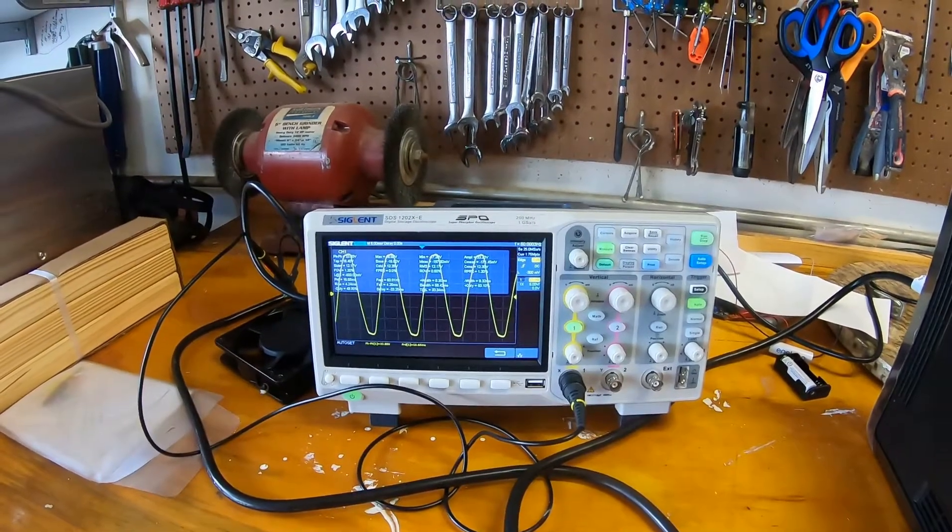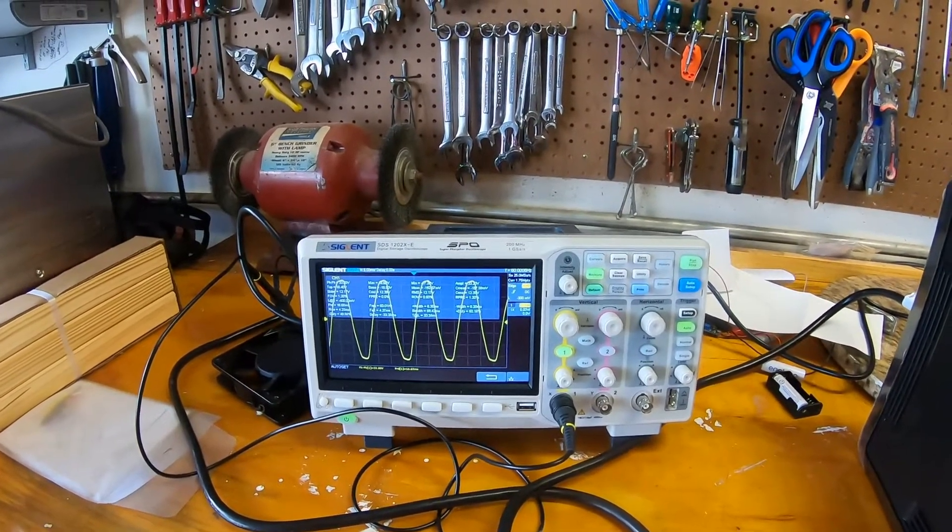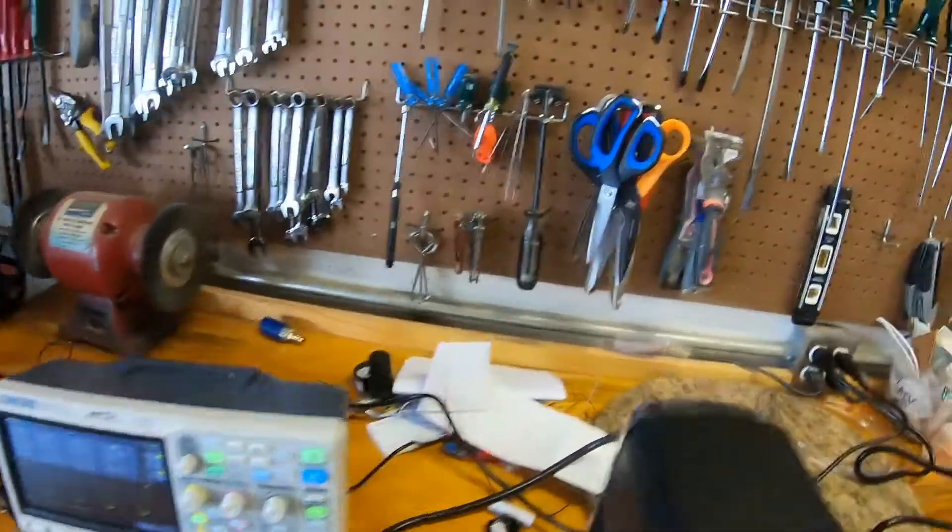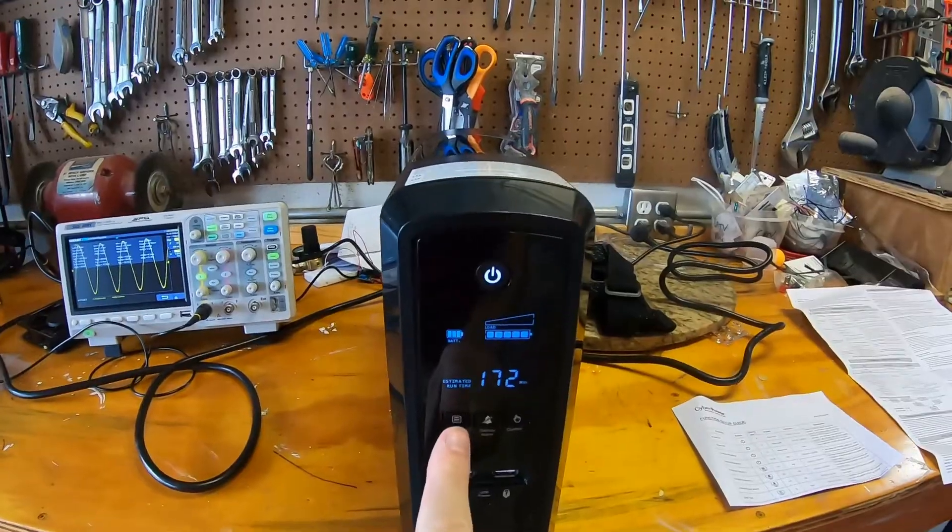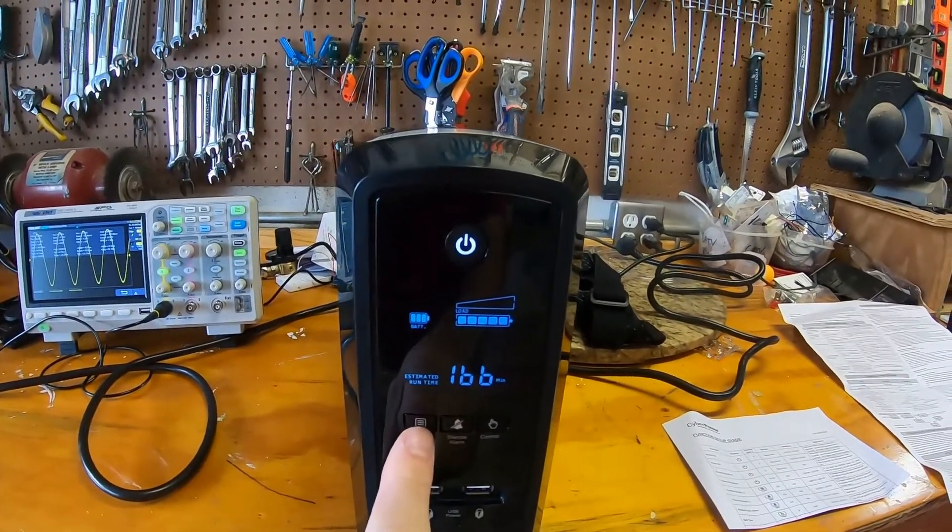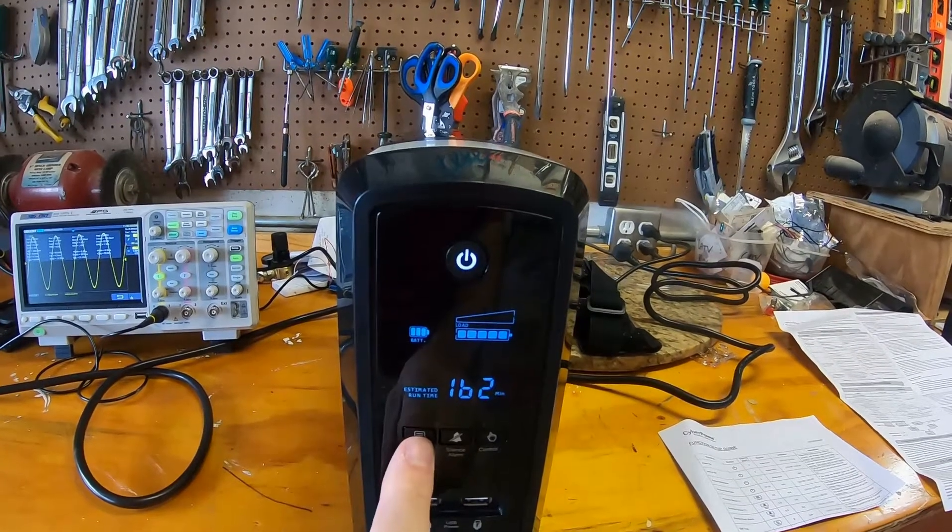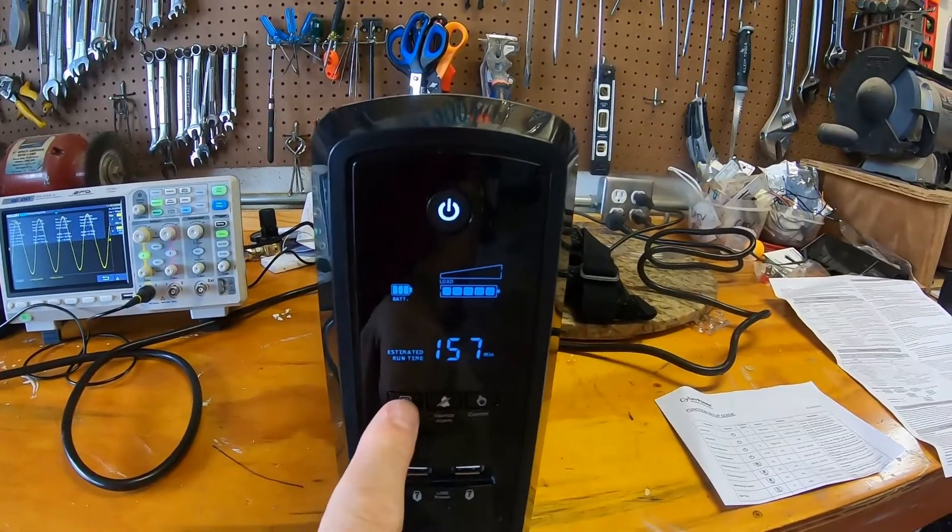Let's see what the display says. We're in utility power now. Let's see what it says. So we're unplugged now. I don't see if the utility displaces anything different. So it's looking at run time estimates going down slowly as you'd expect.